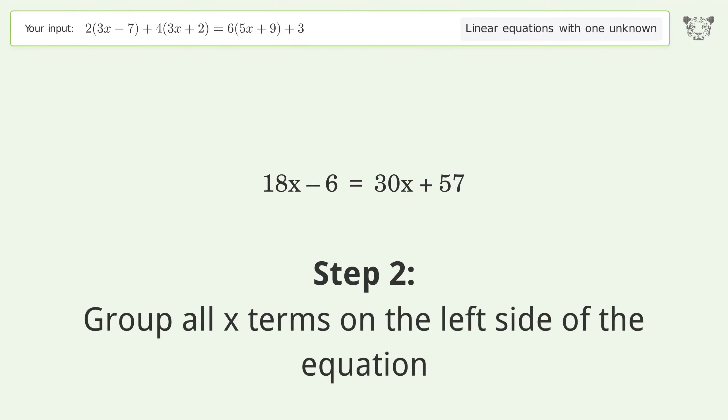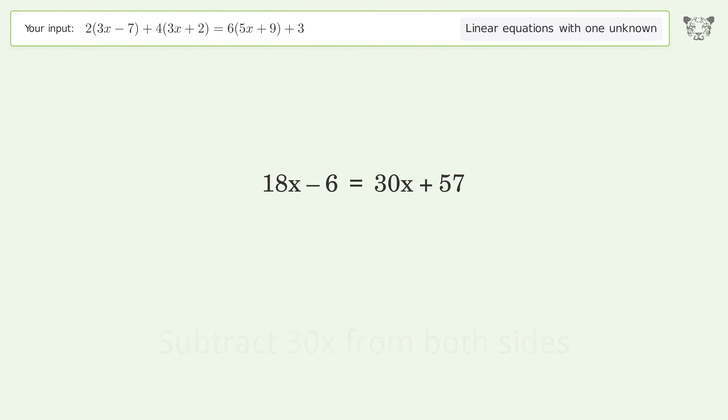Group all x terms on the left side of the equation, subtract 30x from both sides. Group like terms. Simplify the arithmetic. Group like terms. Simplify the arithmetic.